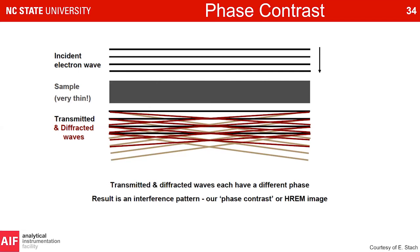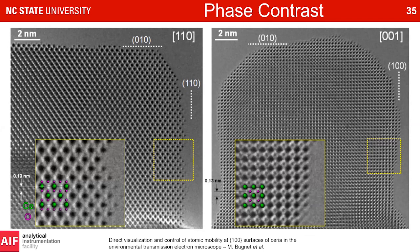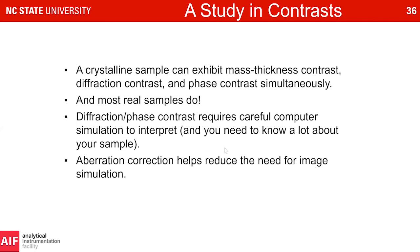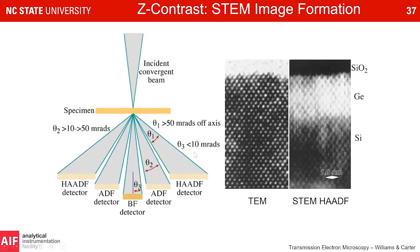Phase contrast — which I've already touched on — is a coherent interference pattern and gives us what we define as high-resolution TEM images. Here are two different orientations of cerium oxide imaged on an aberration-corrective platform, where we can see cerium and oxygen atoms. An important note: before aberration correction, we typically needed computer simulations to interpret images. Aberration correction reduces that need — it's not just about improving resolution, it's about improving the interpretability of our structures.